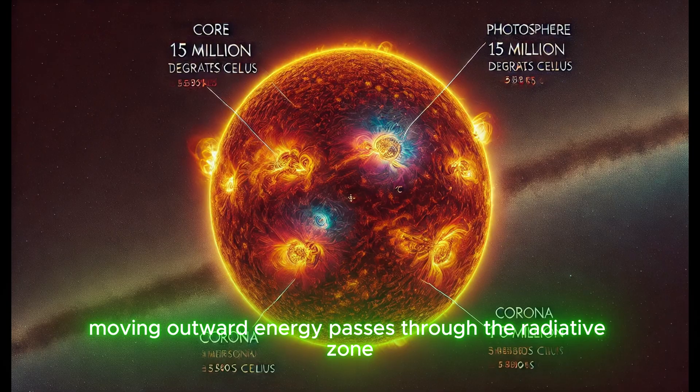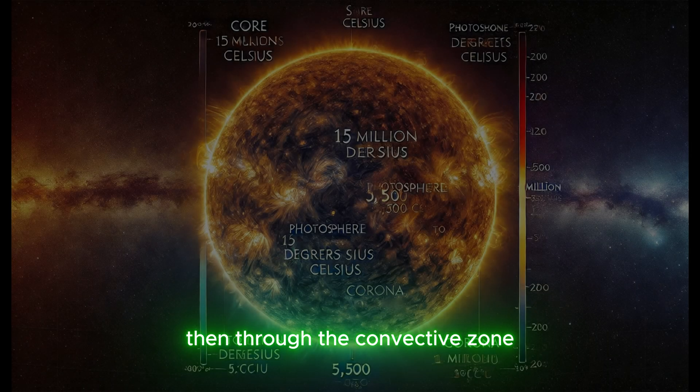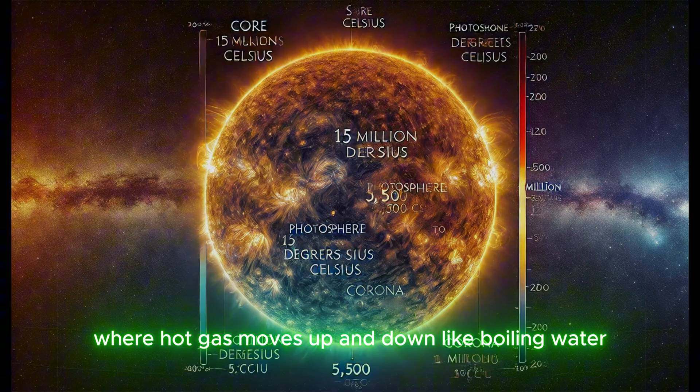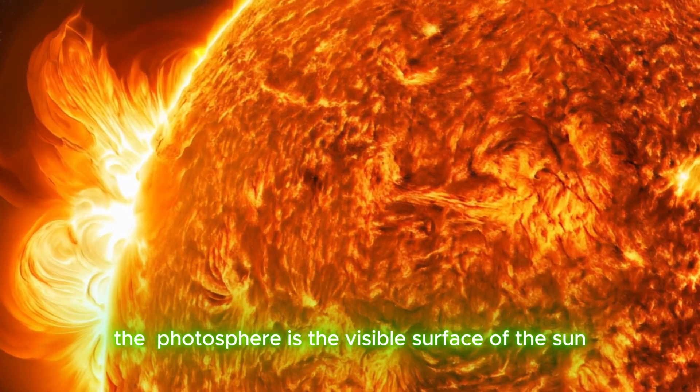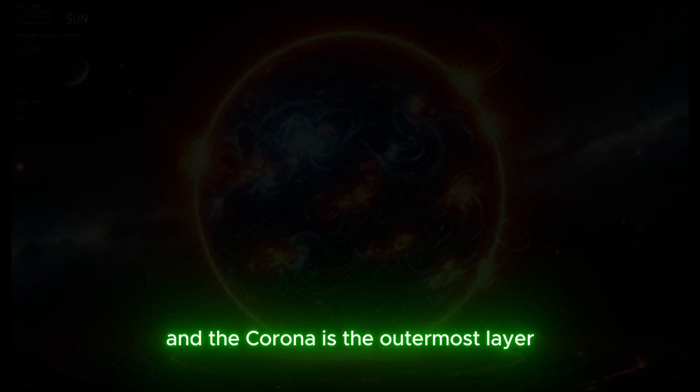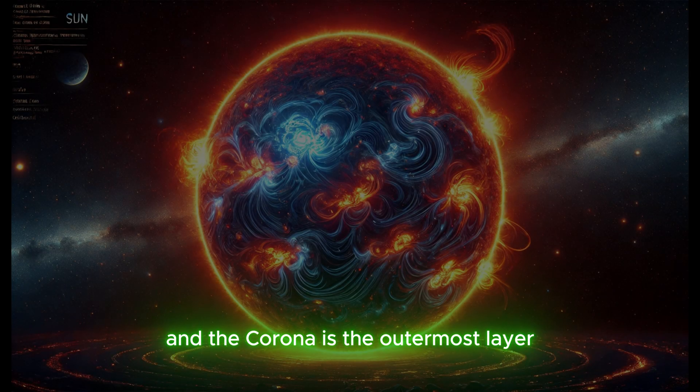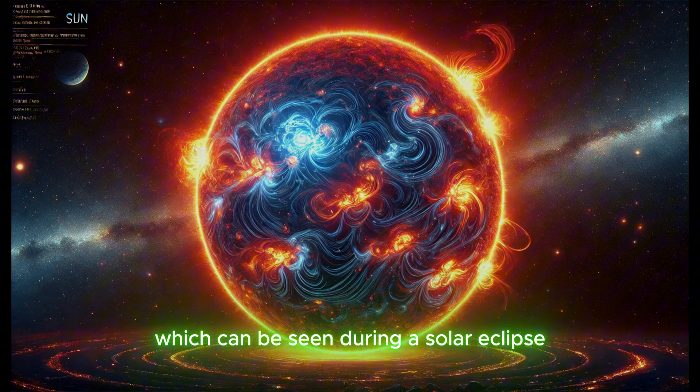Moving outward, energy passes through the radiative zone, then through the convective zone, where hot gas moves up and down like boiling water. The photosphere is the visible surface of the sun, and the corona is the outermost layer, which can be seen during a solar eclipse.